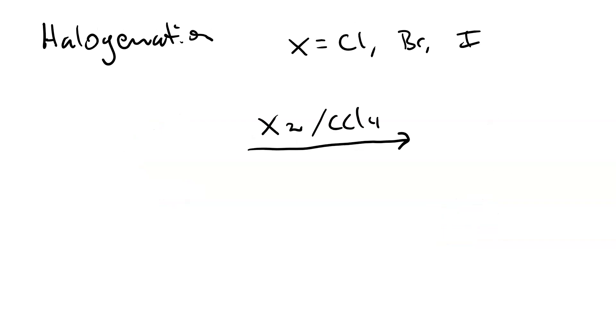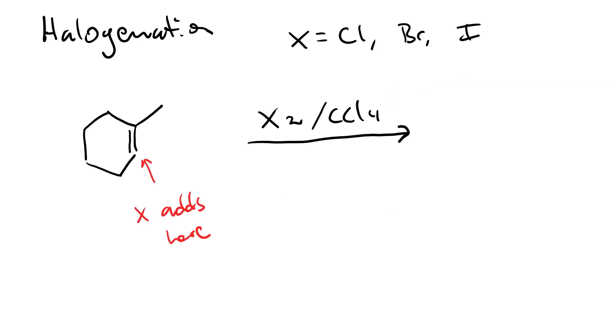When your reagent is a halogen molecule, X2, so either Cl2, Br2, or I2, in the solvent carbon tetrachloride. And often this will just be written like this with the solvent not mentioned. Then you get halogenation. With halogenation, an X atom adds to both of your sp2 hybridized carbons. And since it's symmetrical, there is no regiochemistry to consider.